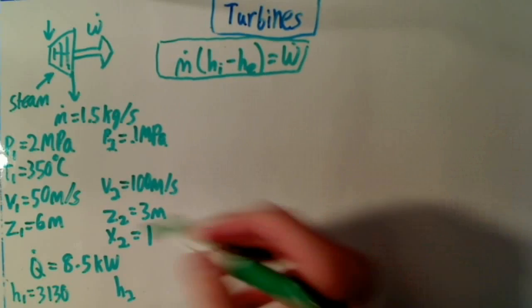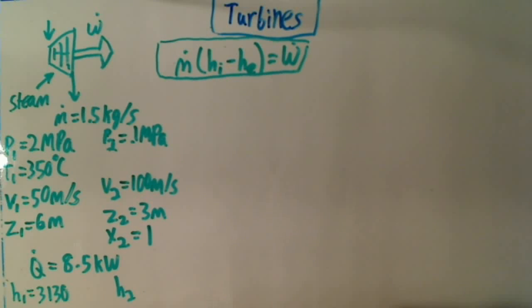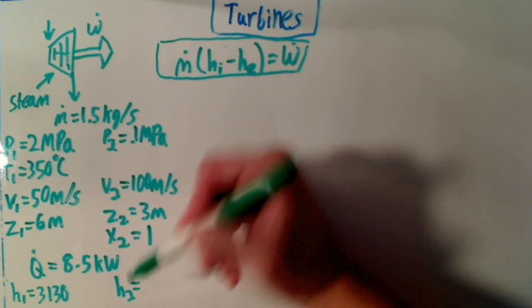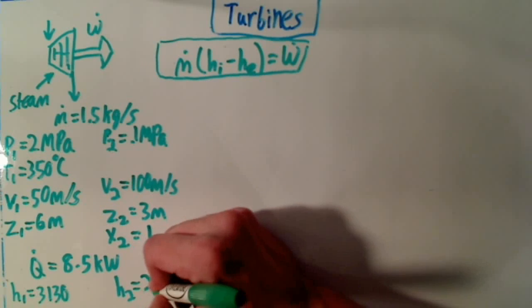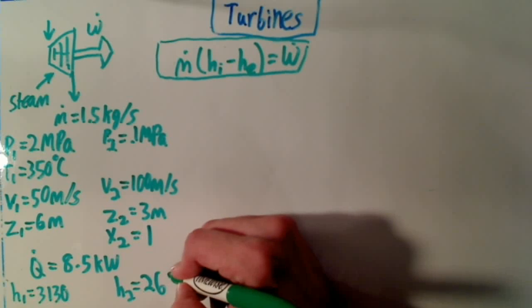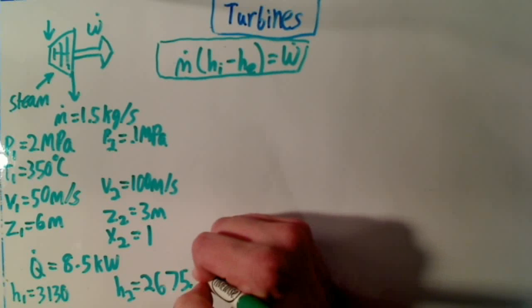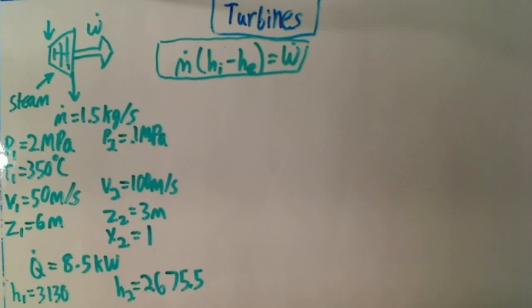And since state 2 is a saturated vapor, it's also going to be really easy. You're not going to have to do any linear interpolation or anything. Its enthalpy is 2,675.5 kilojoules per kilogram. And that's all we need to find the work. So let's get going.